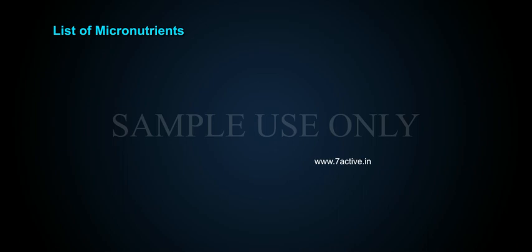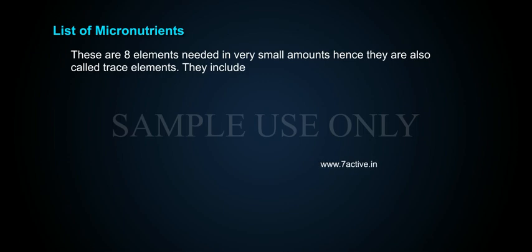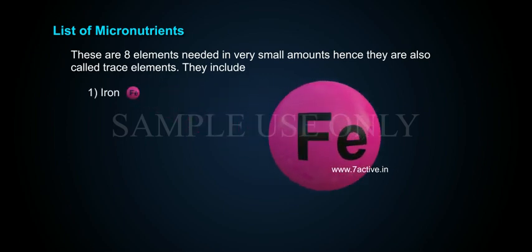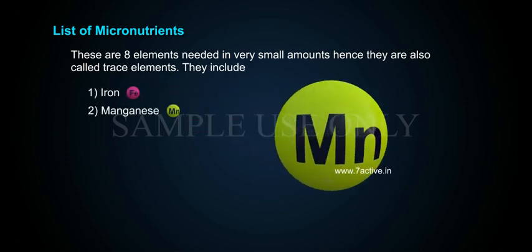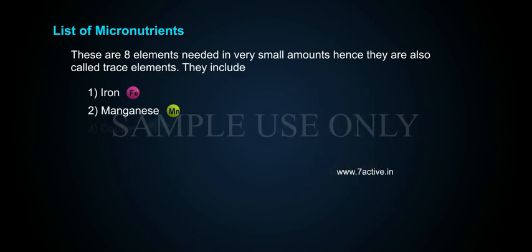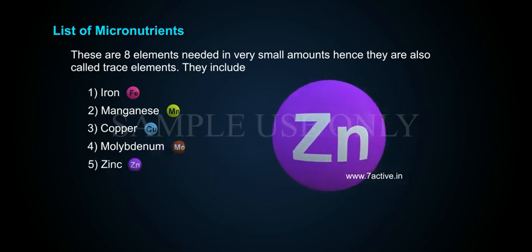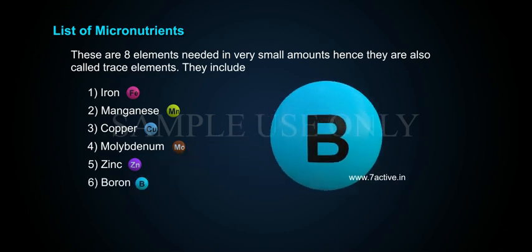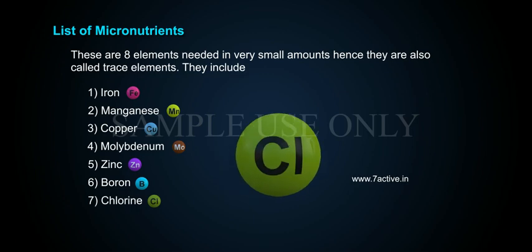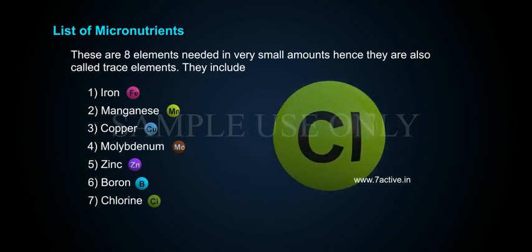Micronutrients are eight elements needed in very small amounts, and are also called trace elements. They include: 1. Iron, 2. Manganese, 3. Copper, 4. Molybdenum, 5. Zinc, 6. Boron, 7. Chlorine, and 8. Nickel.